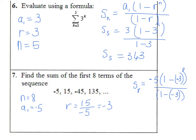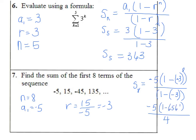Be careful: you cannot make negative-negative a positive in the numerator because the whole thing is to the eighth power. Since 8 is even, negative 3 to the eighth is positive — so it'll be 1 minus whatever 3 to the eighth is. In the denominator, one minus negative 3 equals 1 plus 3 which is 4. So the final answer is 8,200.